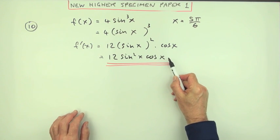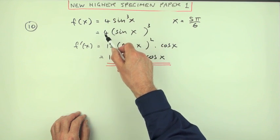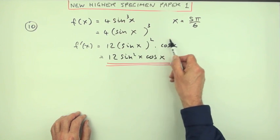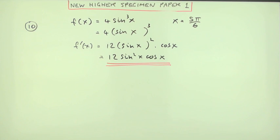This is worth the two marks. The first part was for the three times the four, and the second mark was for remembering to multiply by the derivative. So it just leaves one mark for the evaluation, that seems a bit harsh.